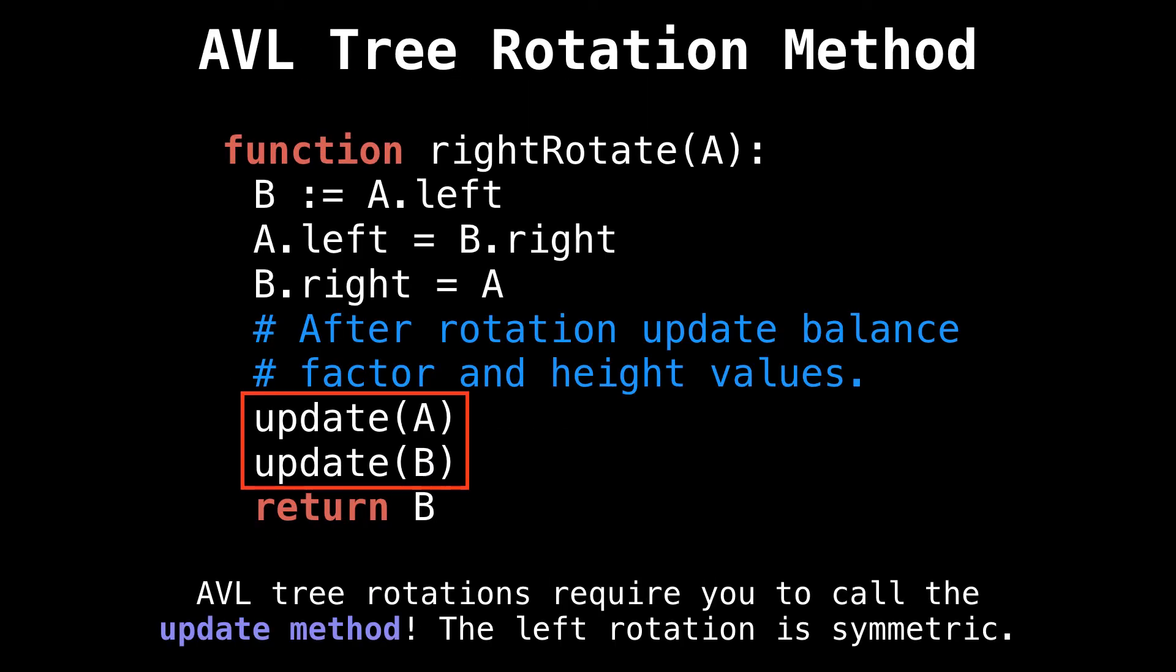In the last video, we looked at this right rotation method. But since we're dealing with an AVL tree in this video, we actually need to augment that method to update the height and balance factor values for the nodes we're moving around when we do rotations. This is a subtle detail you must not forget. Otherwise, your height and balance factor values will be inconsistent. The left rotation case is symmetric to this one, so you should be able to figure it out pretty easily. And that is all for AVL tree insertions.